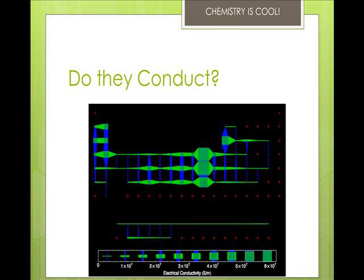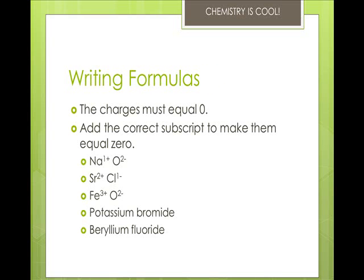When dissolved in water, ionic compounds also conduct. When you write formulas with ionic compounds, you have to remember that all of the charges must equal zero. So what you do is you add the correct subscript to make them equal zero. So when we have this sodium 1 plus and oxygen 2 minus ion, when we bond those together, we get Na2O.